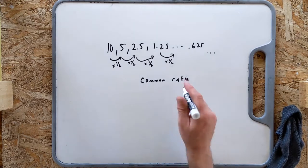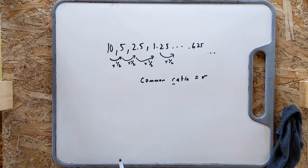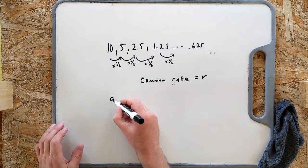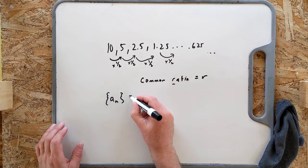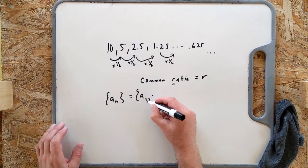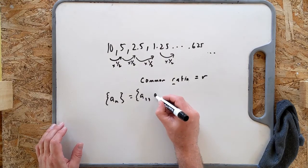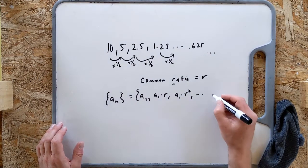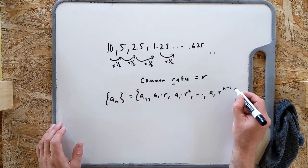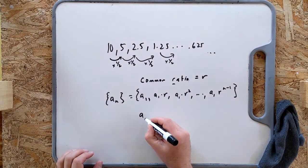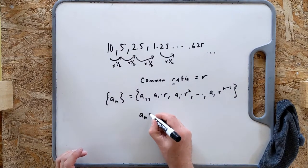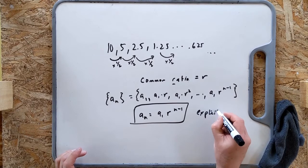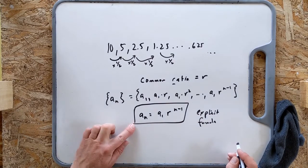A general geometric sequence looks like: a_1, then a_1 times r, then a_1 times r squared, r cubed, r to the fourth, until you get to the last one, which is a_1 times r to the n minus 1. That means a general term a_n is simply the first term times r to the n minus 1. Make sure you write that down — that is the explicit formula for a geometric sequence.